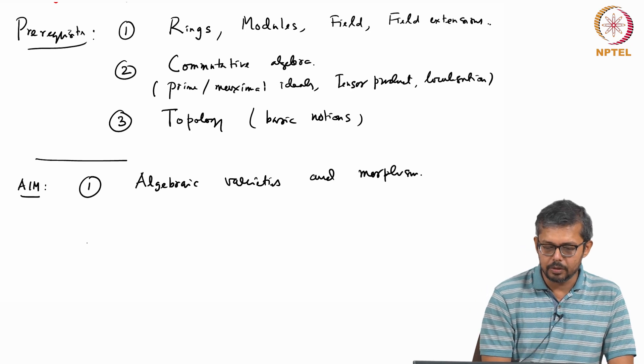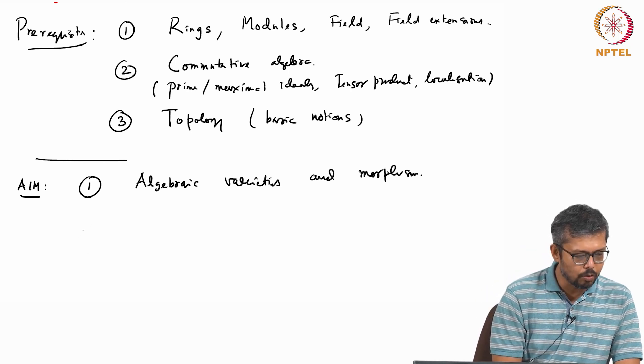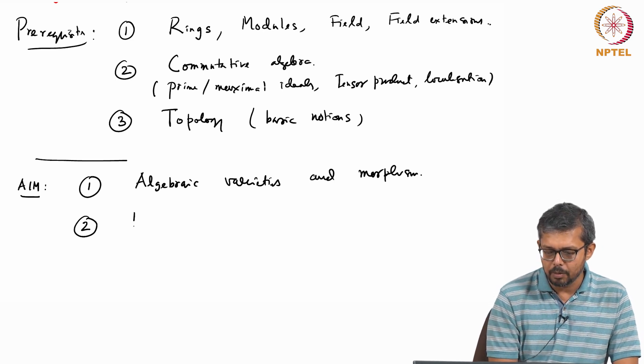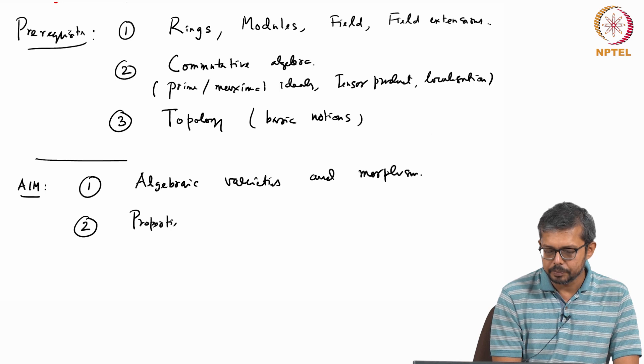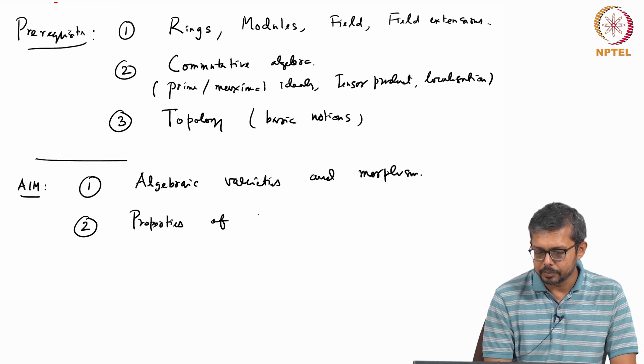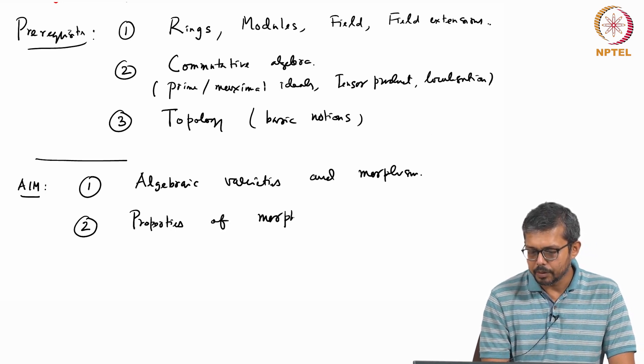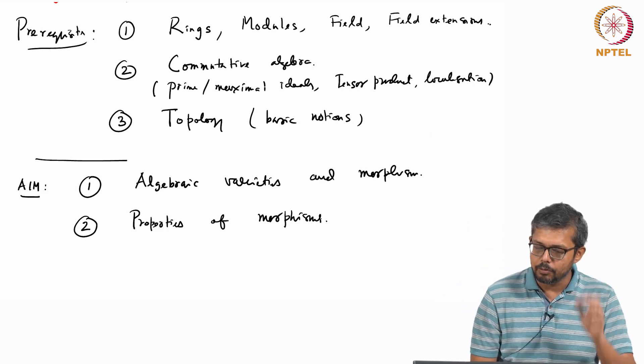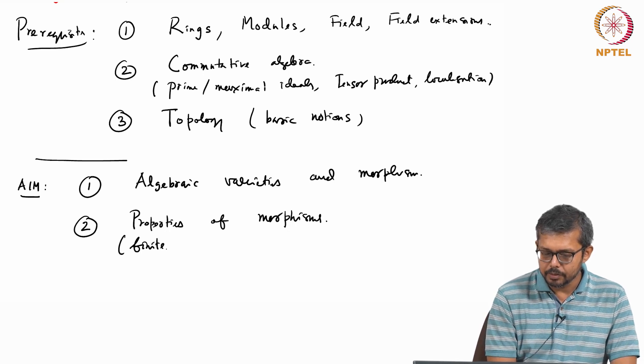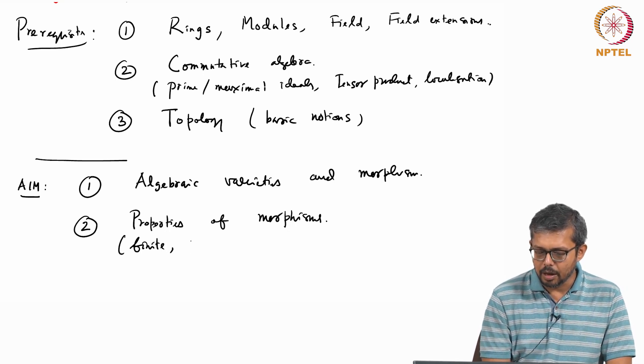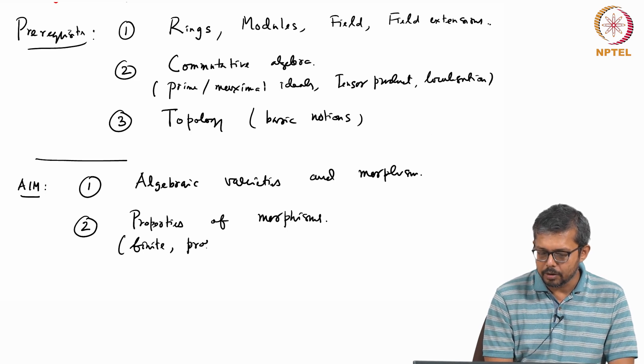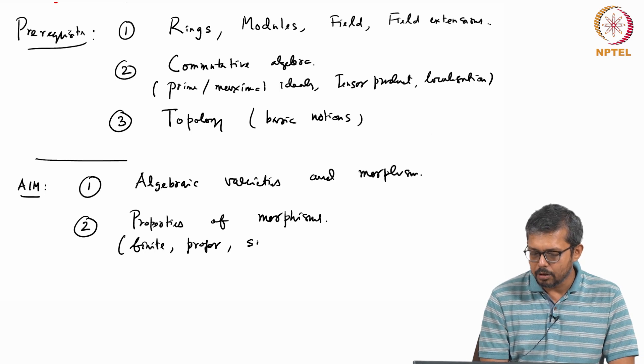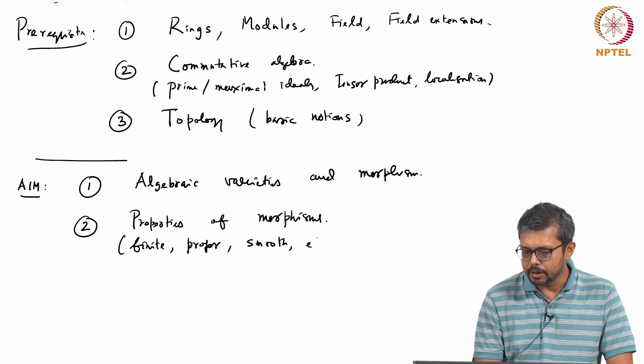And then we will go to the next topic which is properties of algebraic morphisms - properties of morphisms. Here mostly we will talk about what are called finite morphisms, then we will come to proper maps, then we will talk about smooth morphisms, etc.